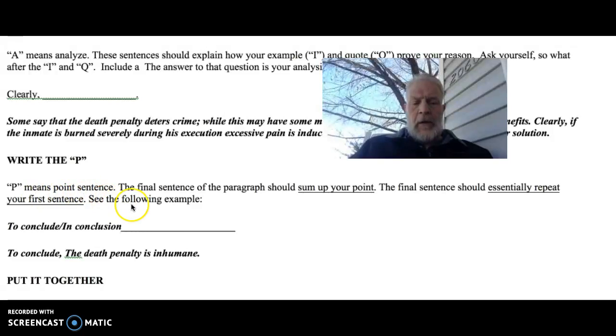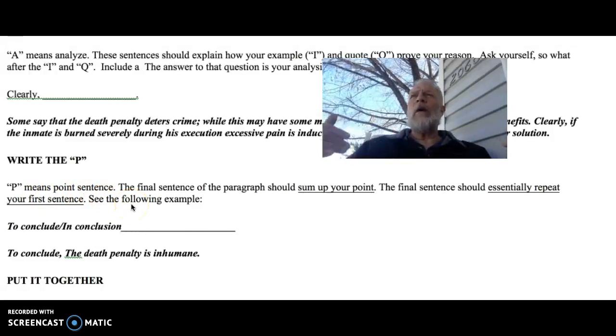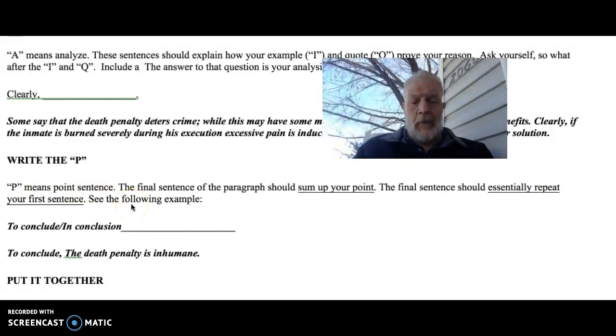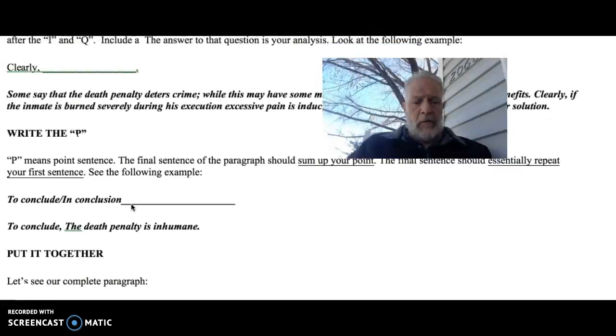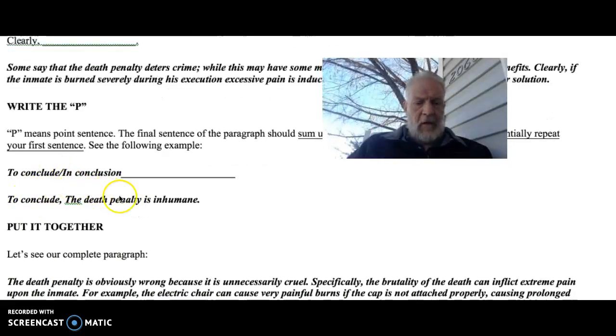So finally, the P means your point, your point being in this entire argument. Basically, it sums it up. It can be a repetition of your first sentence. Remember how we talked about echo effects in writing. It's all the same, whether you're writing an essay composed of many paragraphs, or just a simple paragraph. They all should have topic sentences. They should all include some sort of attention getter or hook, and also should sum up your first sentence. So you would use something like, to conclude.